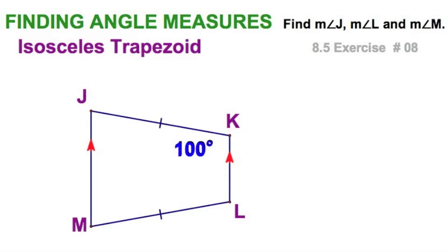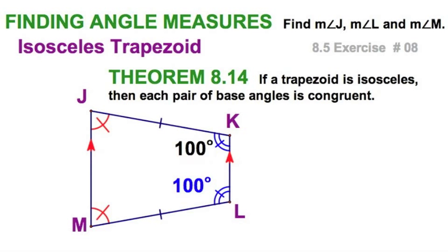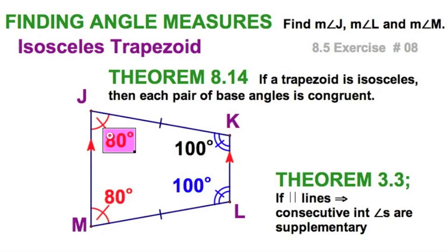An isosceles trapezoid — there are a few things we know. The base angles are congruent. I've got 100 here and 100 here. I also know from way back that parallel lines means the consecutive interior angles must be supplementary. So 180 minus 100 is 80 — this one is 80 as well.